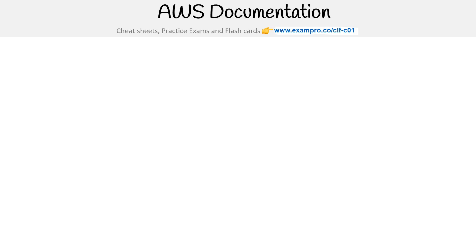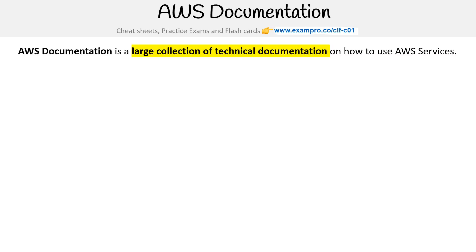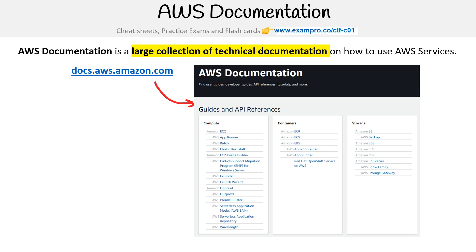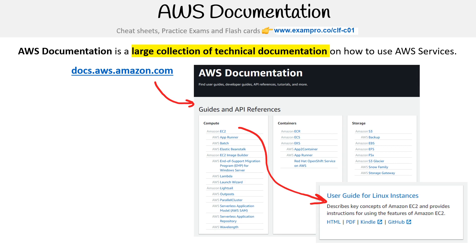Let's take a look at AWS documentation, which is a large collection of technical documentation on how to use AWS services, found at docs.aws.amazon.com. This is the landing page where you can see all the guides and API references. If you expand into EC2 and click on the user guide, you can see it in HTML, PDF, and Kindle format.